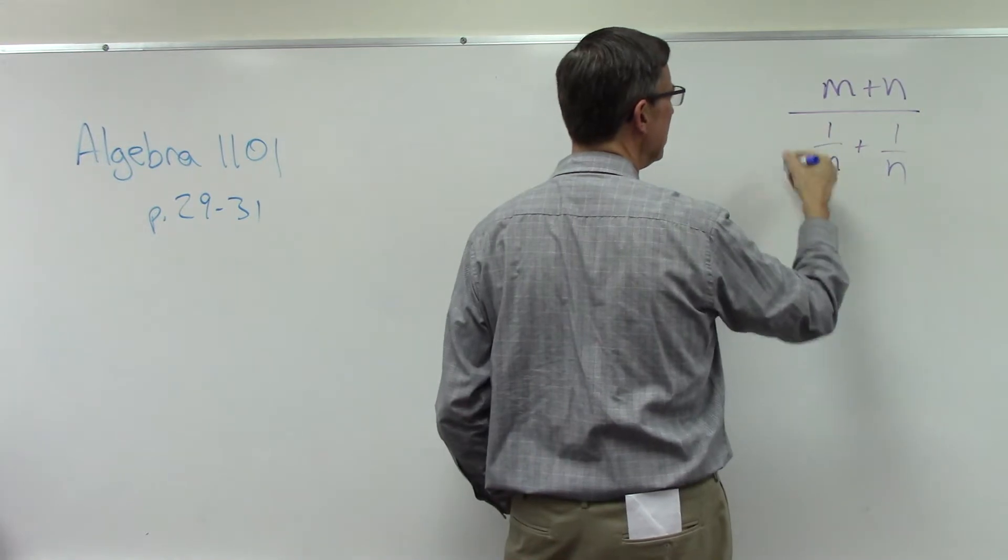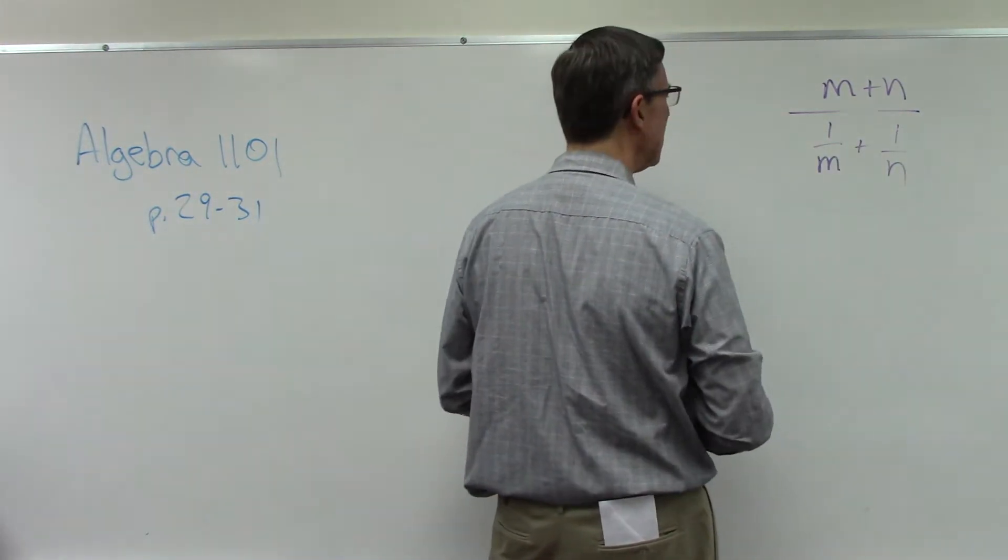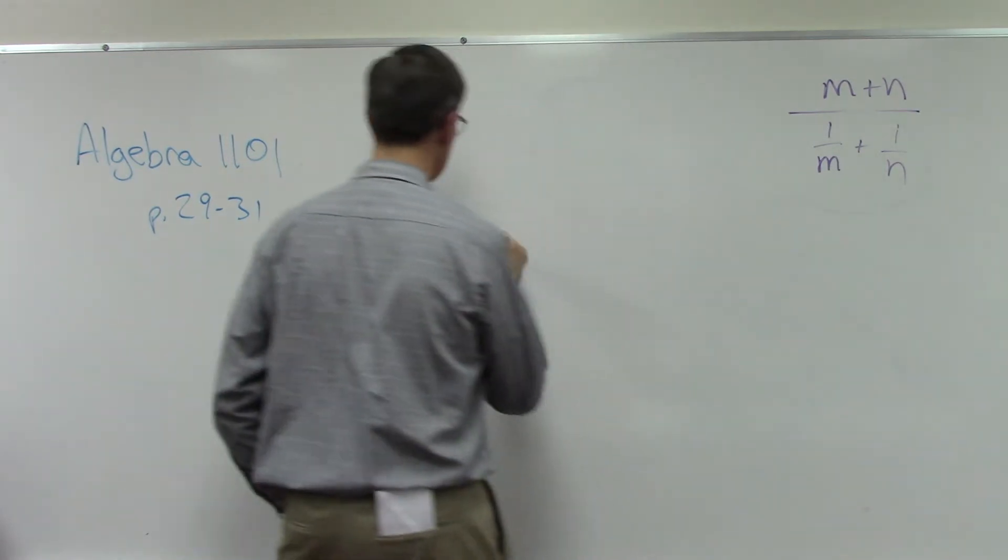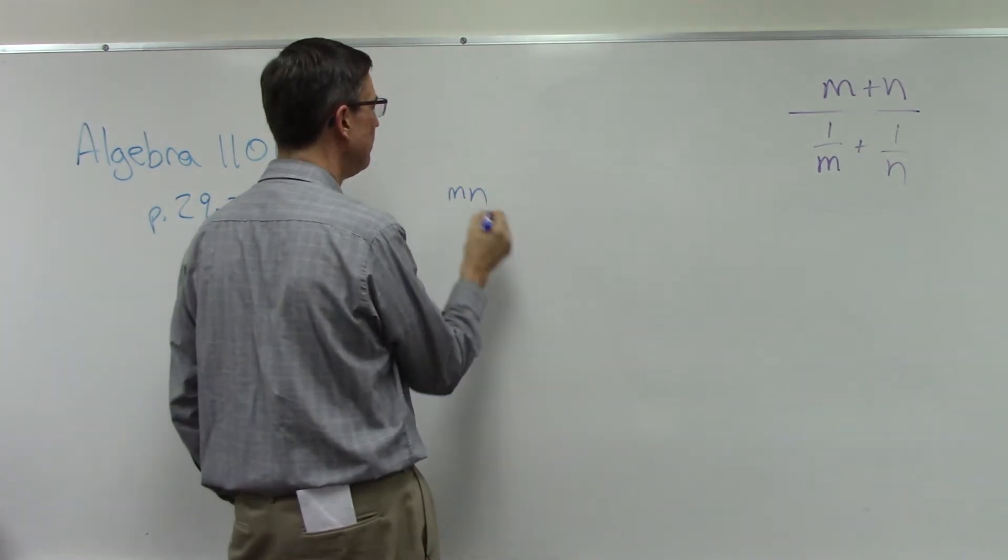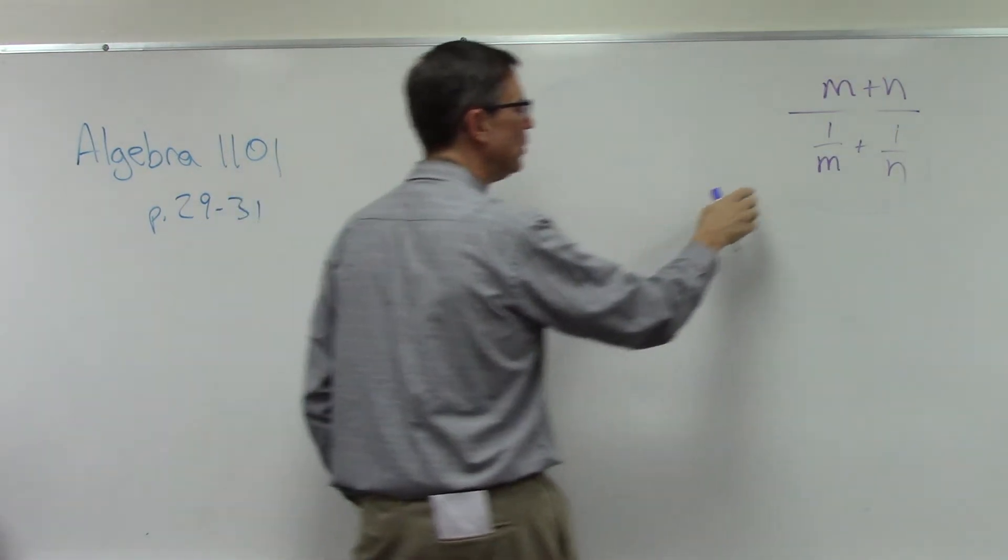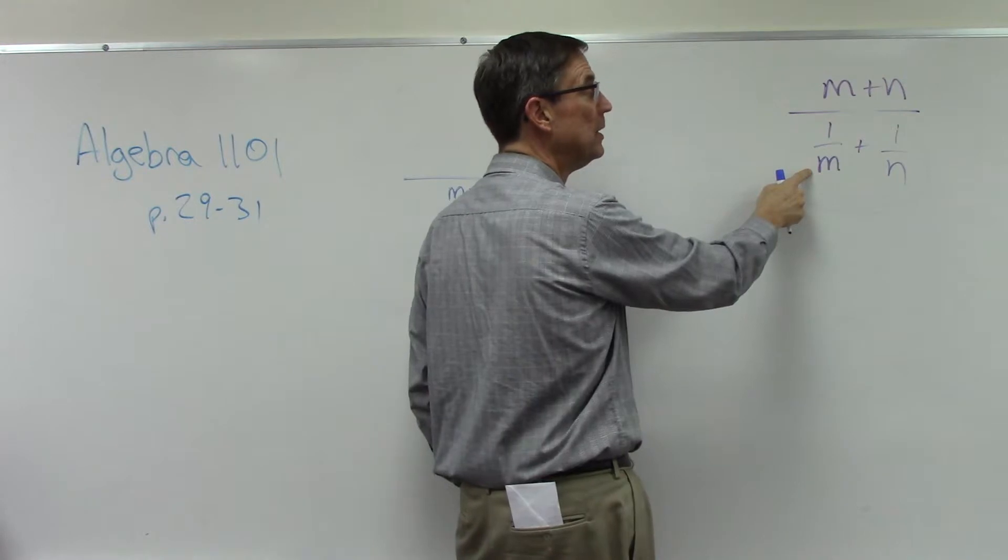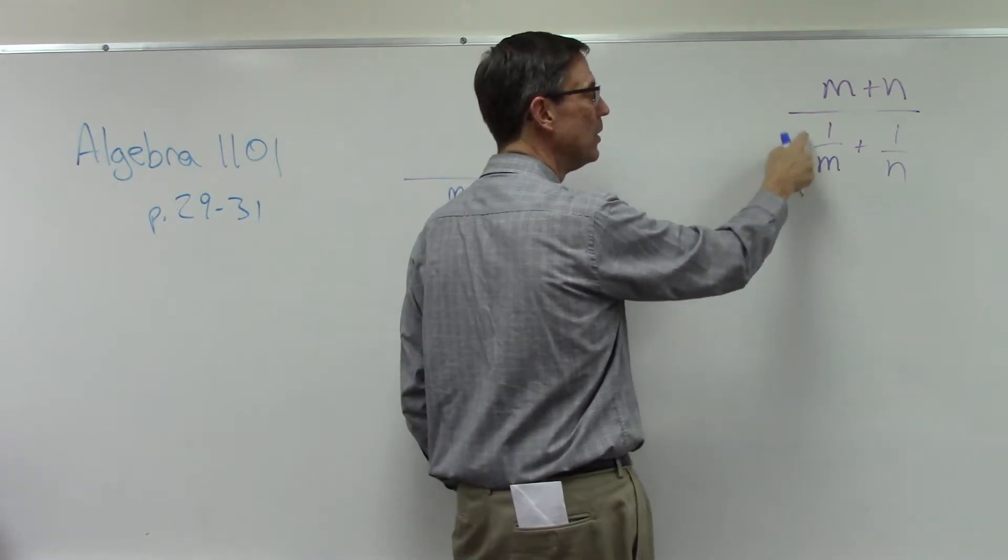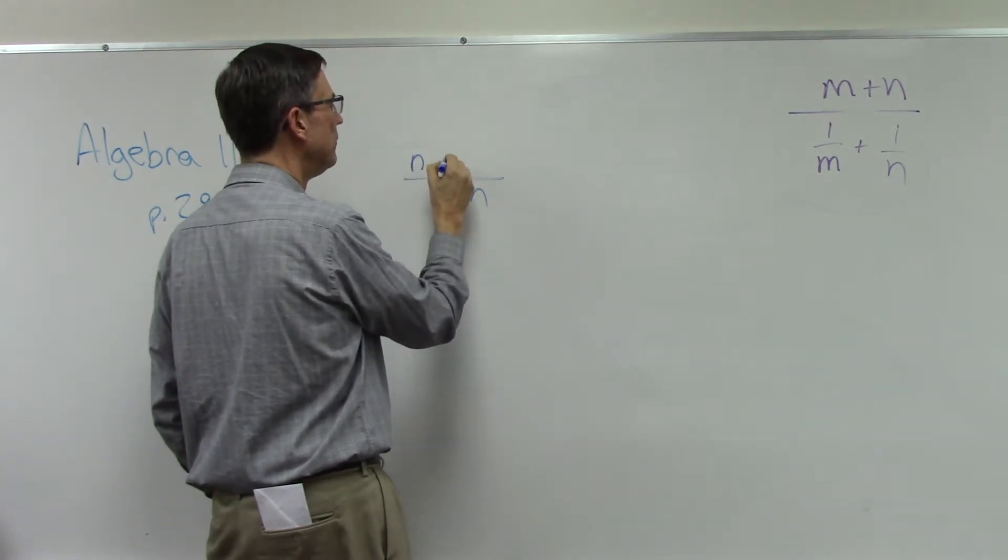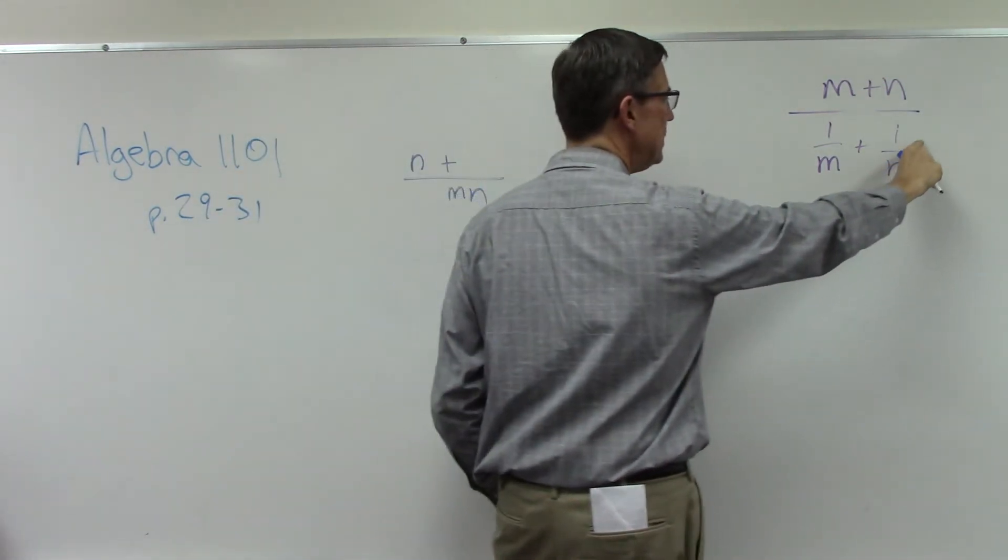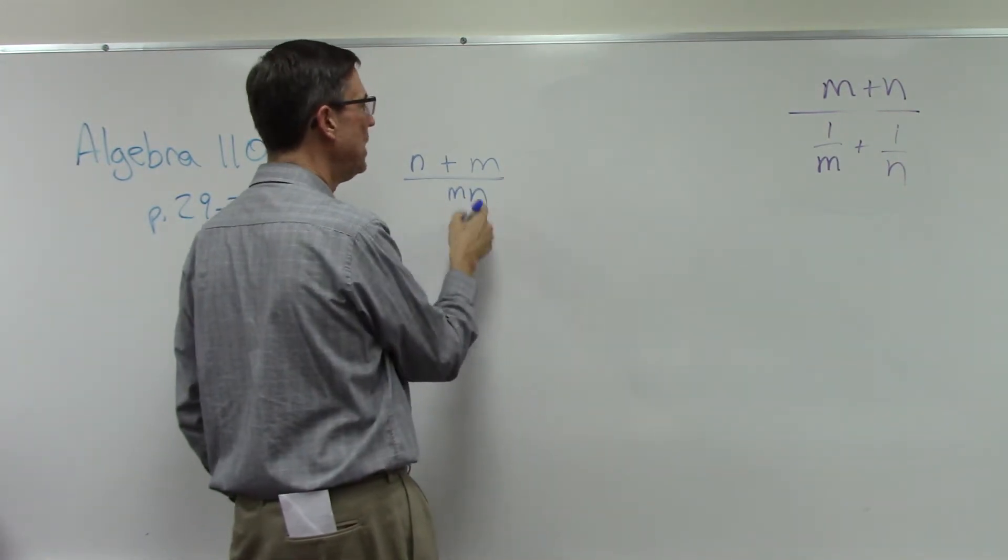What would be the common denominator? Let's just focus on the denominator here. What would be the common denominator? How about mn. So what do I have to multiply times m to get mn? Do I hear an n? So n top and bottom.